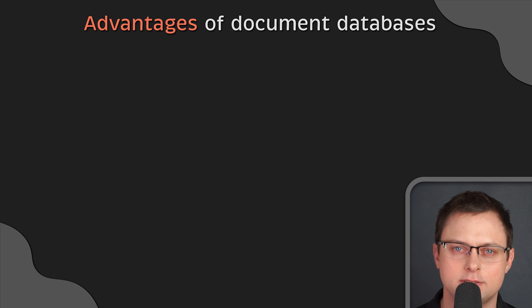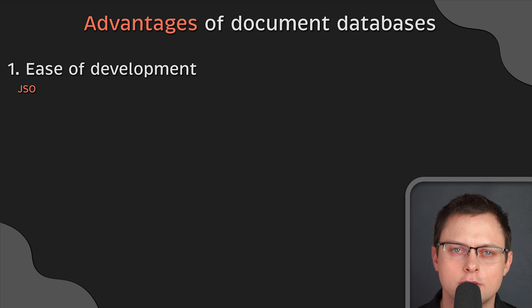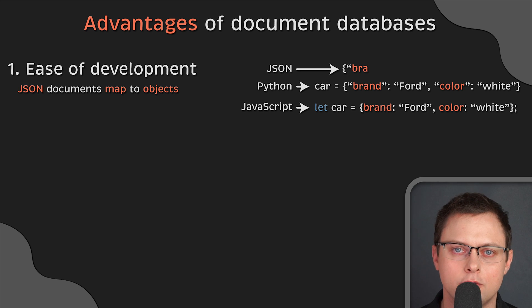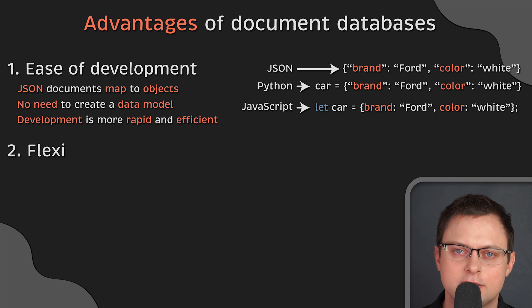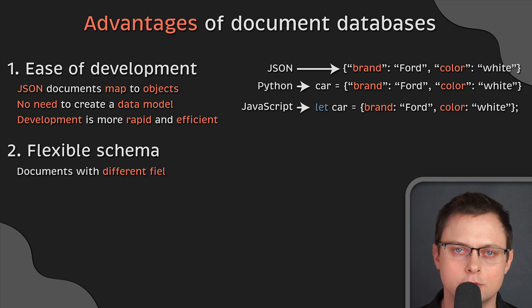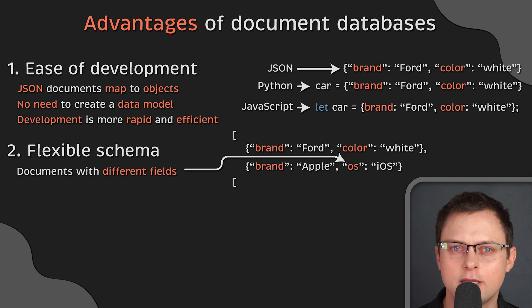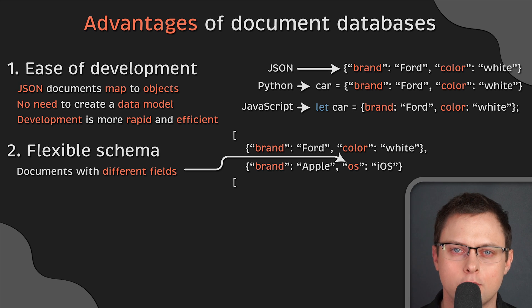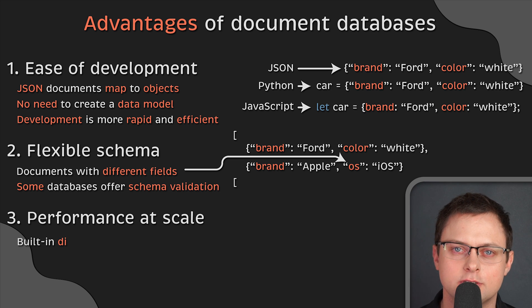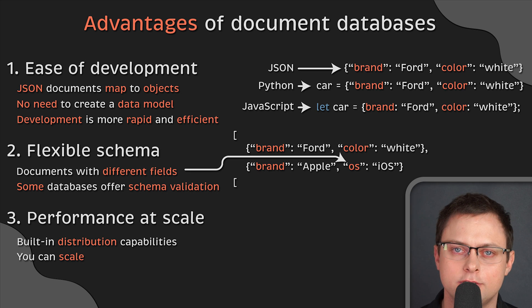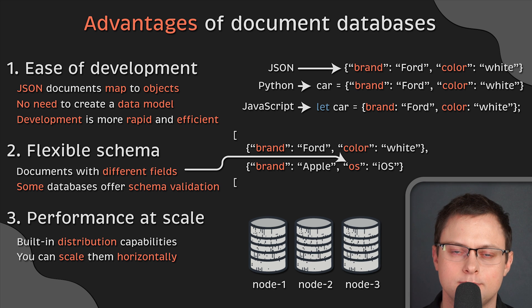The advantages of document databases start with ease of development — JSON documents map to objects, a common data type in most programming languages. When building applications, developers can flexibly create and update documents directly from code, spending less time creating data models beforehand, making development more rapid and efficient. There is also a flexible schema — a document-oriented database allows you to create multiple documents with different fields within the same collection, which is handy for unstructured data like emails or social media posts. Some document databases also offer schema validation to impose restrictions on structure. Another advantage is performance at scale — document databases offer built-in distribution capabilities, allowing horizontal scaling across multiple servers without impacting performance, which is also cost-efficient.